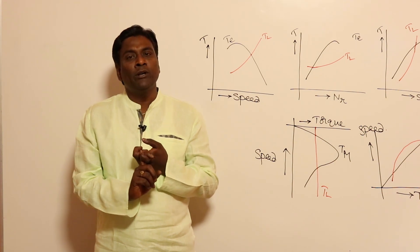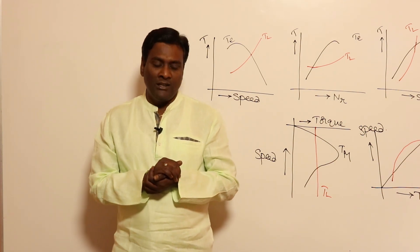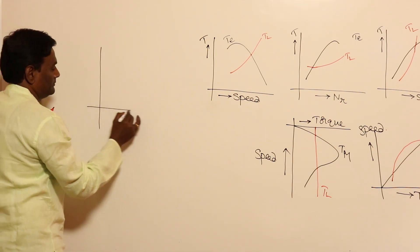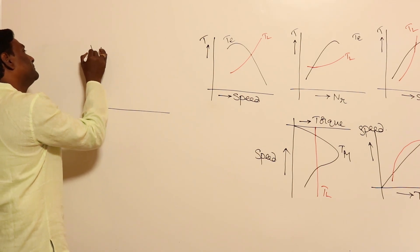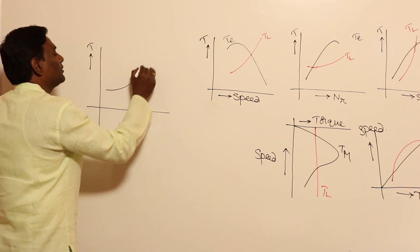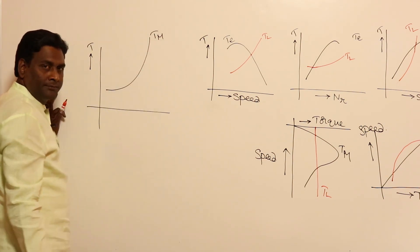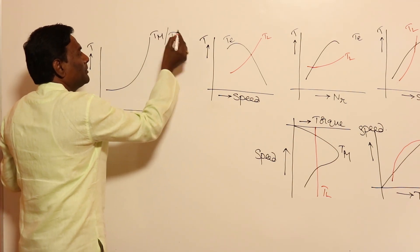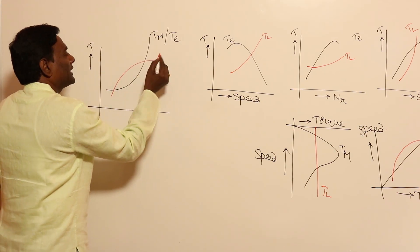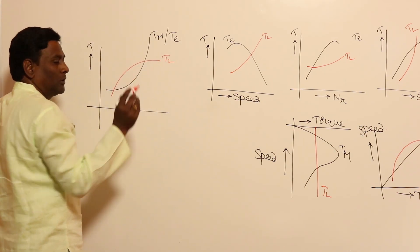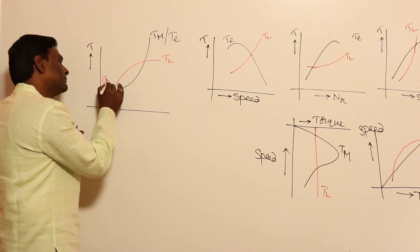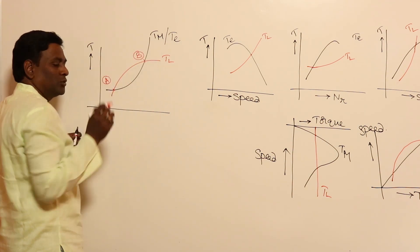When these two characteristics meet at a point, stable or unstable operating points will emerge. To explain that, let us consider a torque vs. speed graph. The electromagnetic torque developed by the motor has a certain curve, and for a low torque requirement, we get two intersection points — point A and point B.